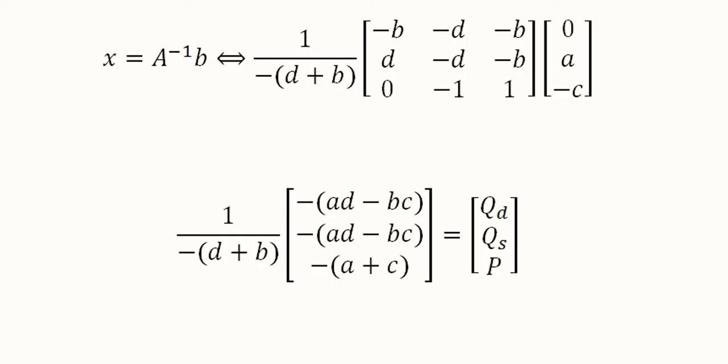Now we can clearly see that Qd is equal to minus bracket start ad minus bc bracket close divided by minus bracket close bracket start d minus b.